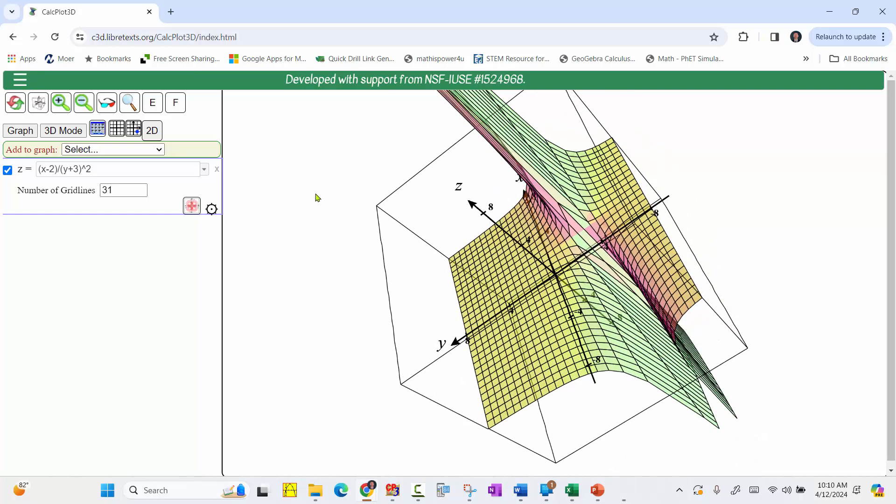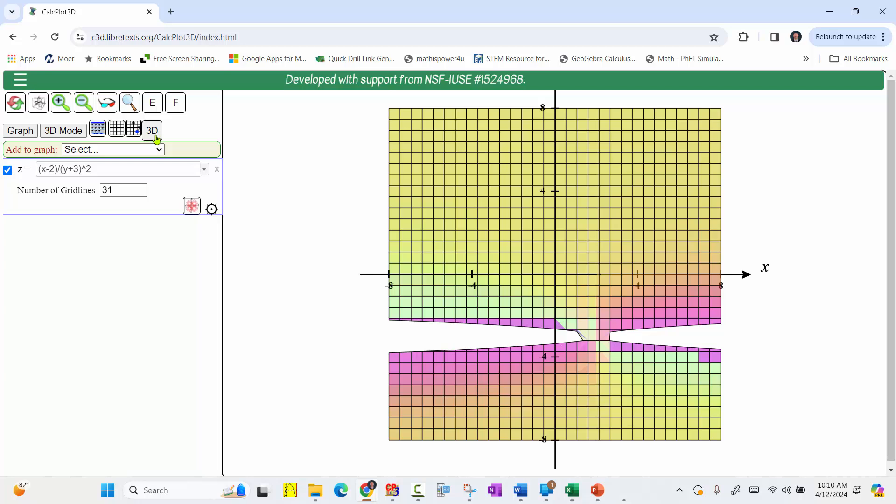To see this, we can look down on the xy plane. Notice the break in the graph along the line, y equals negative three. I hope you found this helpful.